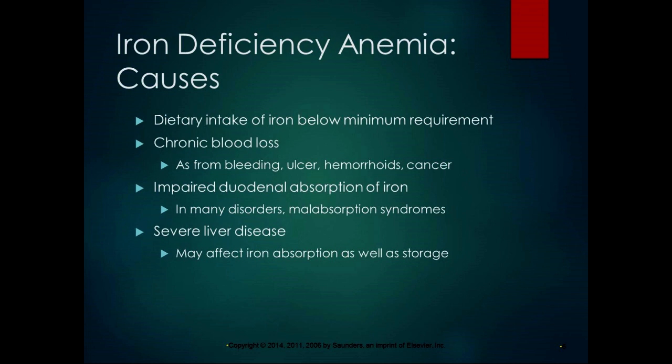Chronic blood loss from a bleeding ulcer, bleeding hemorrhoids, or cancer can cause iron deficiency anemia. Excessive menstrual flow is a common cause as well — it means less iron is recycled and you don't maintain adequate hemoglobin production. Impaired duodenal absorption of iron from malabsorption syndromes, lack of hydrochloric acid, ileitis, Crohn's disease, and severe liver disease can also affect iron absorption and storage. A protein deficit further impedes hemoglobin synthesis.